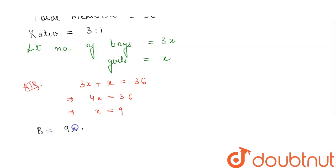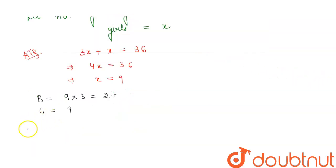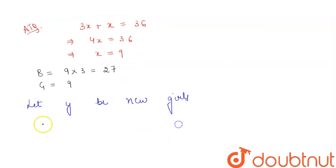9 into 3, which is 27, and our girls will be equal to 9. Now the question says that we have to add girls so that the new ratio becomes 9:5. So if we let y be new girls, the number of boys is 27